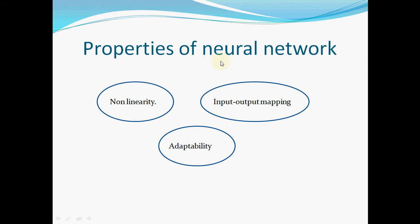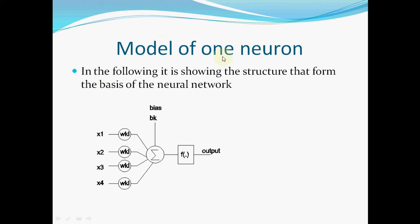The properties of the neural network are: non-linearity, input-output mapping, and adaptability. This is the model of one neuron. It is shown the structure that forms the basis of the neural network — here the vector of the inputs, here the vector of the weights. The output of the neuron is formed by passing the linear combination of the inputs through a function — normally non-linear — called the activation function. So the output of the neuron is the output of the activation function.